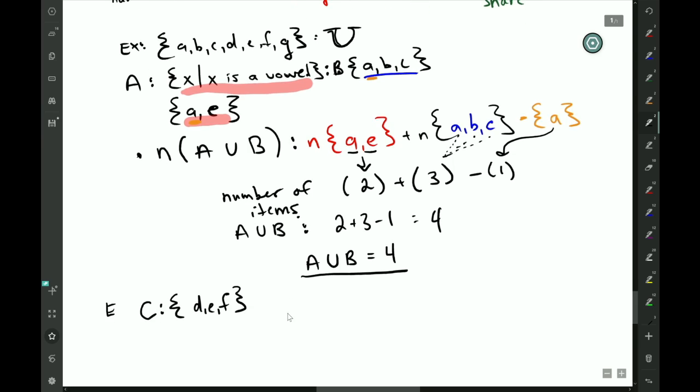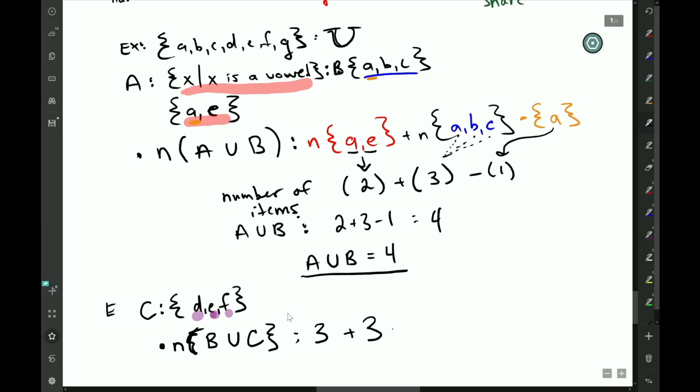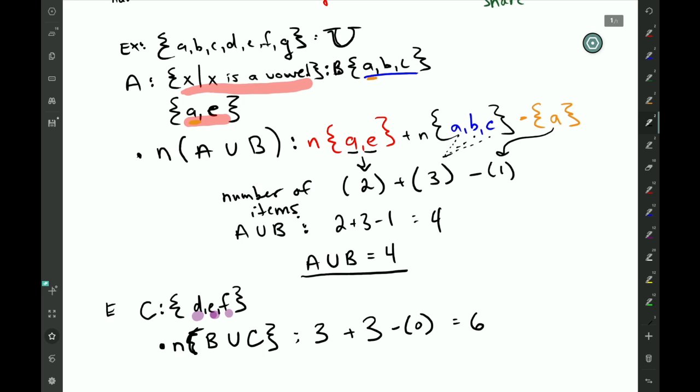My question is, what is the number of things—and we will say B union C. Well, the number of things in B: there are three of them. The number of things in C: there are also three of them. But they don't share any elements. D, e, f is different than a, b, c, so in this case there is no intersection, so minus nothing. So there are six things.